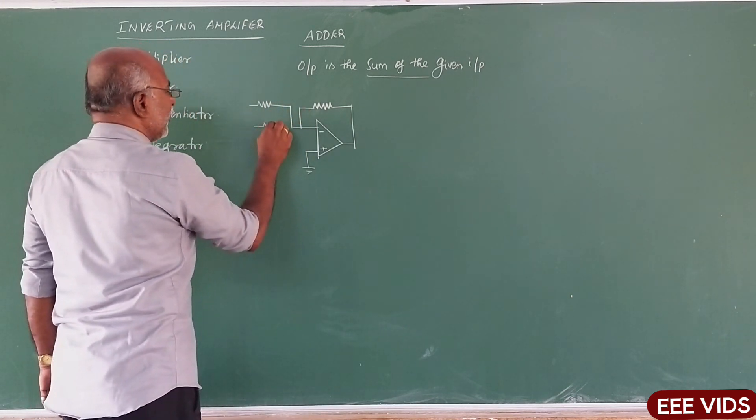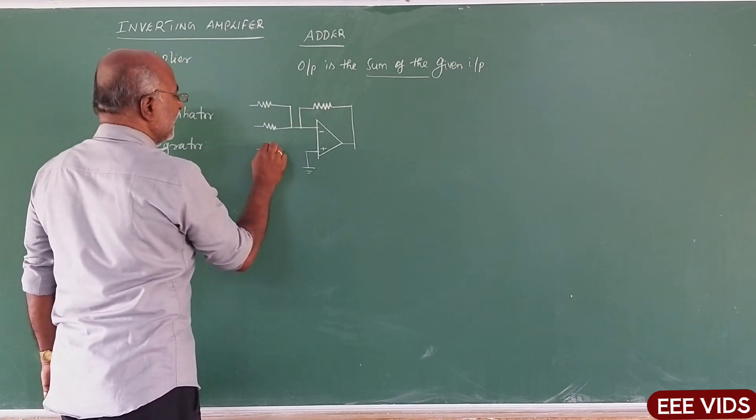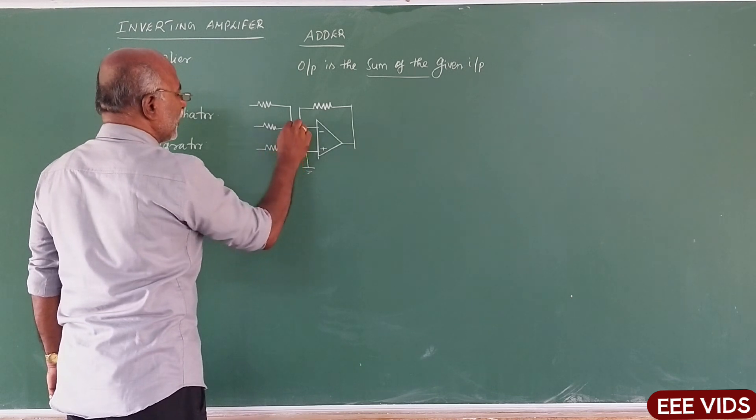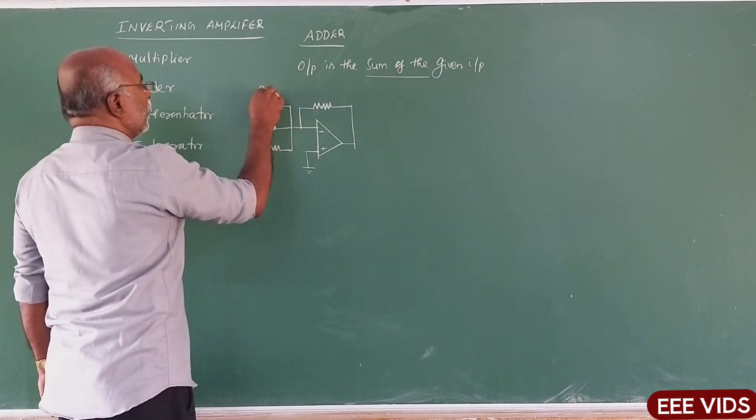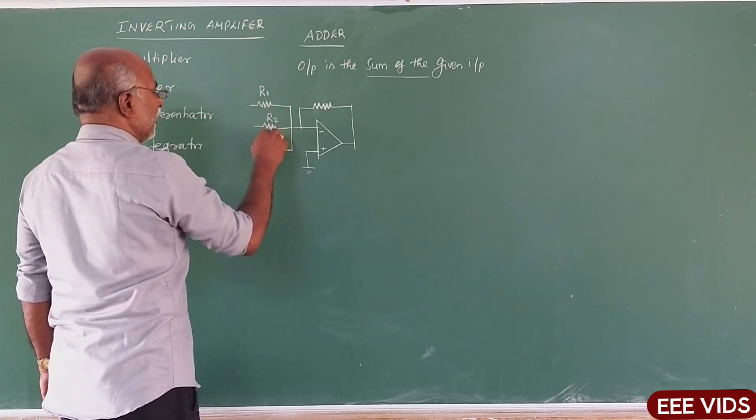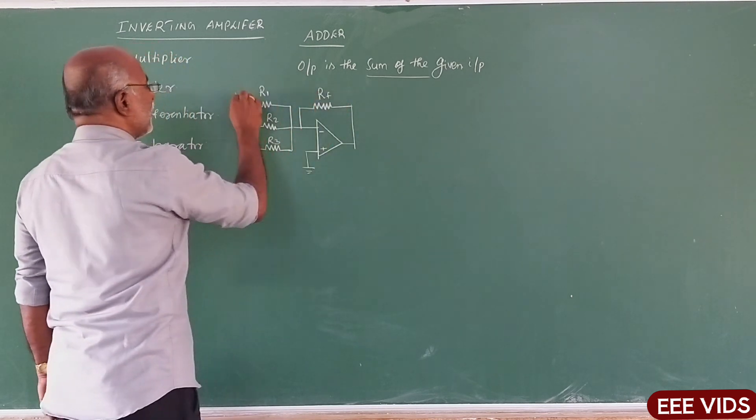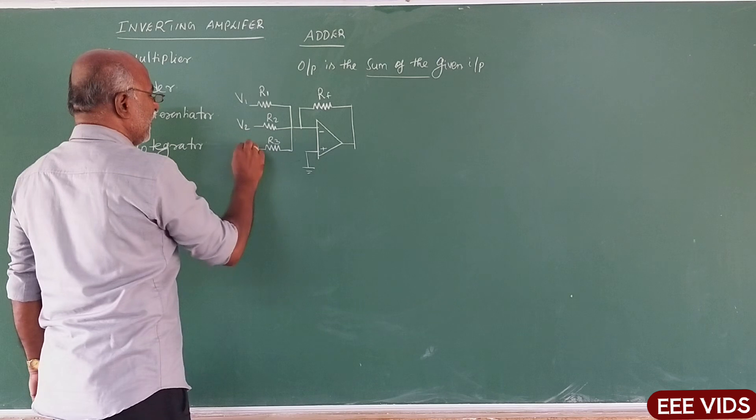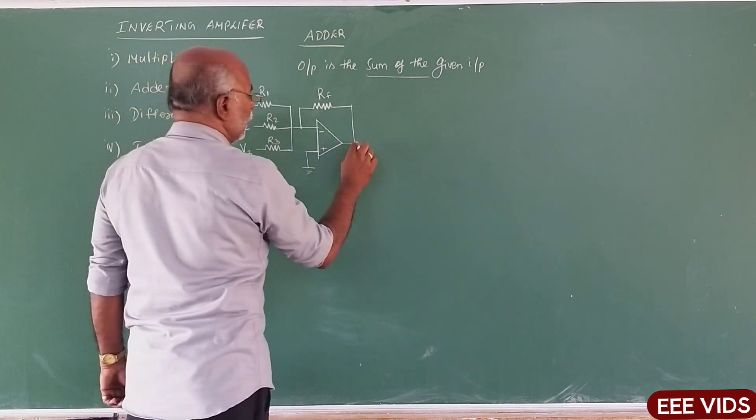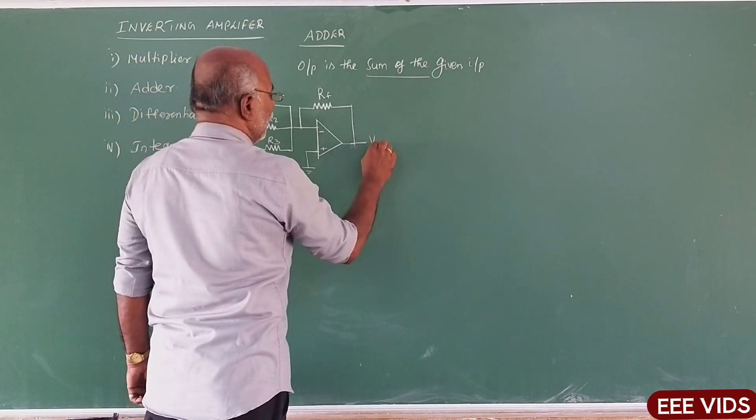How many inputs applied? Here, one example. One input. R1, R2, R3, V3. It is Rf. Here apply voltage V1, V2, V3. So here output, Vout.